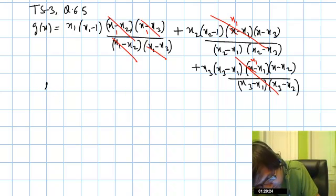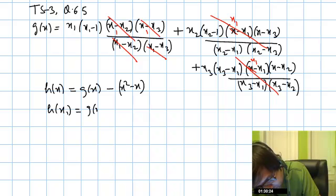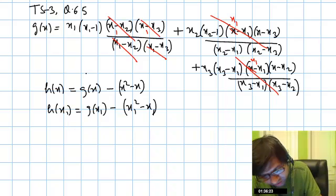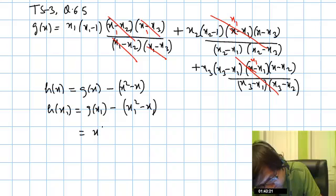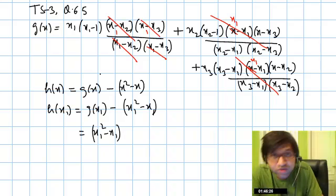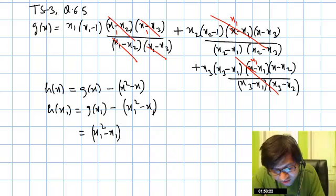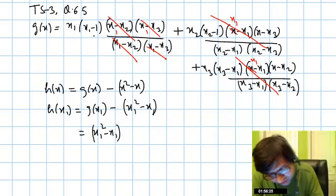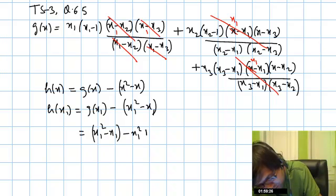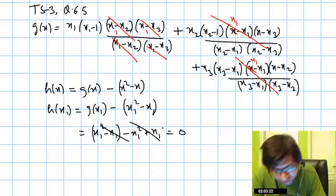h(x) we assume as g(x) minus x² minus x. So h(x₁) is g(x₁) minus x₁² minus x₁. g(x₁) we have just seen on simplification, g(x₁) is equal to x₁² minus x₁. When I replace x equal to x₁, this becomes 0, this becomes 0, and on canceling these two factors from numerator and denominator we get x₁² minus x₁ minus x₁² plus x₁ cancels out. So you can see h(x₁) is 0. The function h(x) we have taken in such a way that it is 0 for x₁.